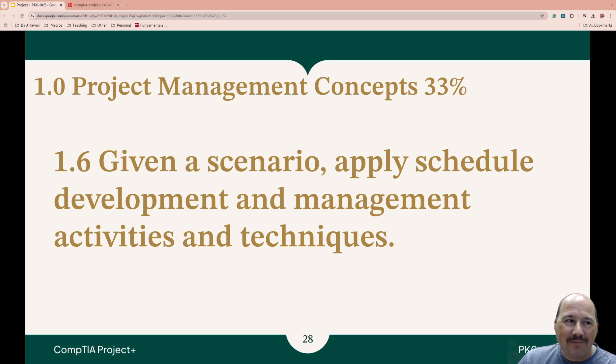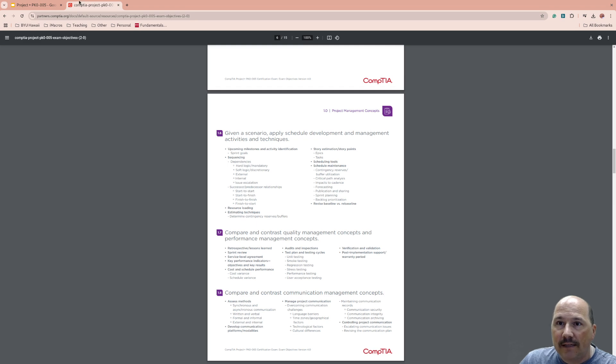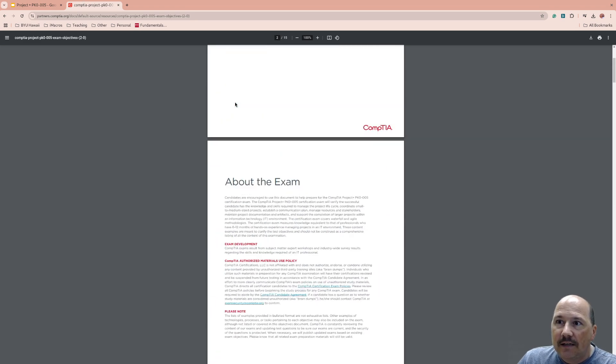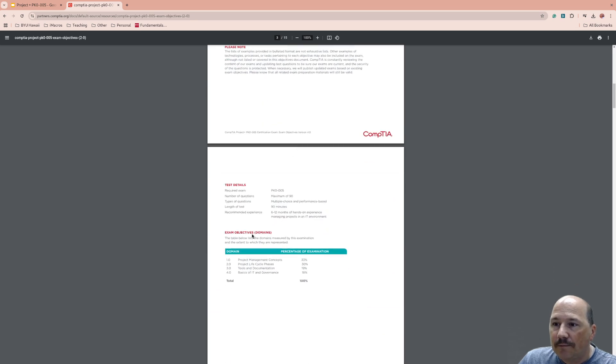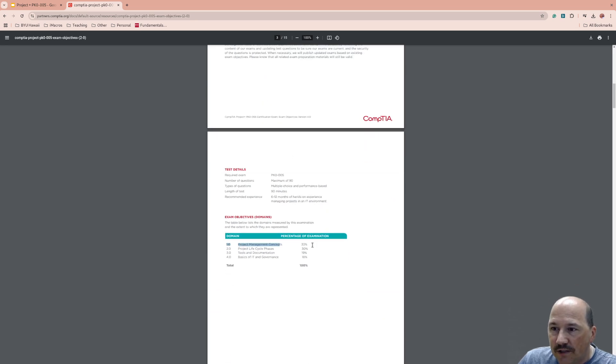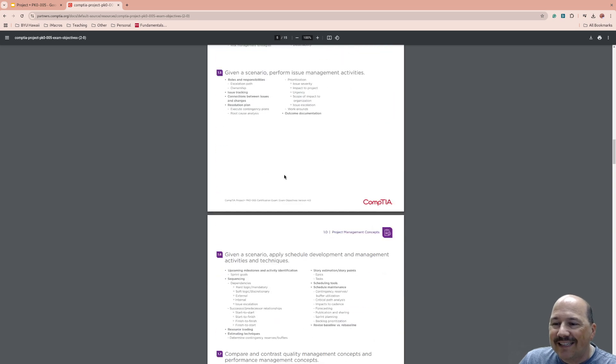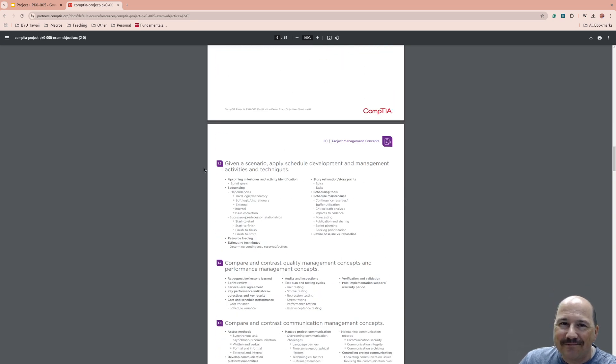Well, welcome back to number six of our Project Plus playlist. We're on Domain Project Management Concepts, which is 33%. And we're on 1.6, given a scenario, Apply Schedule Development and Management Activities and Techniques. So we're grabbing this information right from CompTIA's Project Plus Objectives. This is Project Plus Exam Objectives. I'll link to this down below. We're on Domain 1, which is 33%. And we're on 1.6, which is right here. Let's go.